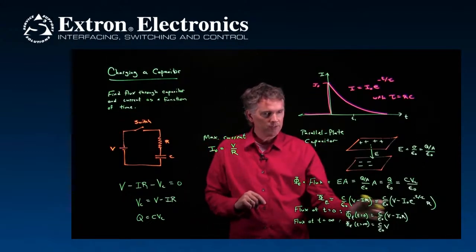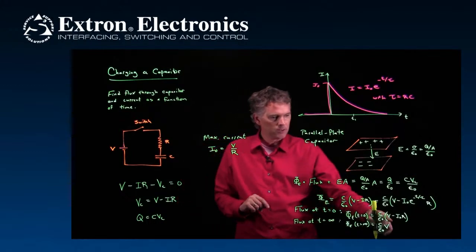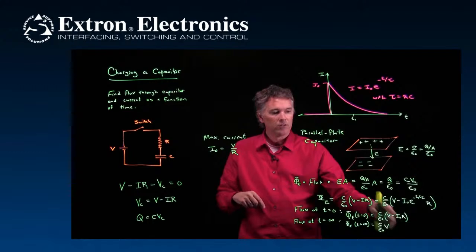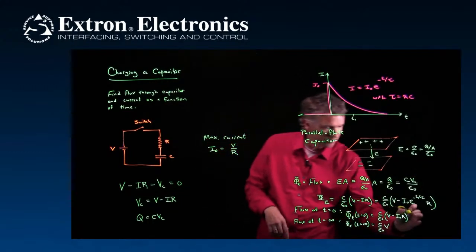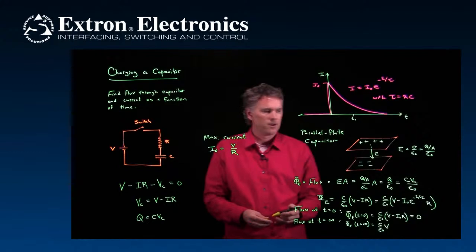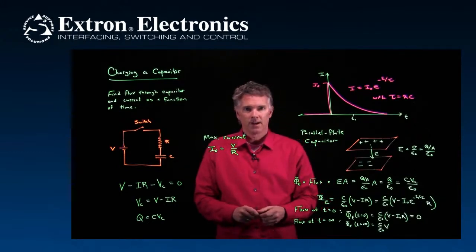And now, if we go back to our flux calculation, and you look at this result right here. Wait a minute. V is equal to I naught R. So what's the flux through the capacitor at T equals zero? It's zero. Hopefully that's clear. If not, come see me in office hours. Cheers.